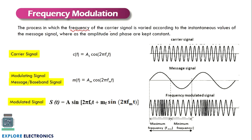Frequency modulation is a process in which the frequency of the carrier signal is changed while keeping amplitude and phase constant. The carrier frequency is varied with respect to the message signal. As the message signal amplitude increases, the carrier frequency increases, and as it decreases, the frequency becomes less. The carrier and modulating signals are represented with the same equations as AM, but the variation in frequency is considered for the modulated signal expression.